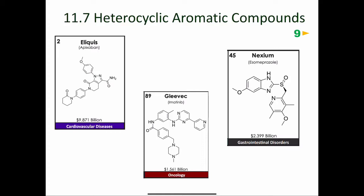Many blockbuster drugs contain heterocycles. You can see that Eliquis has made almost $10 billion and contains a heterocycle. The same thing applies for Gleevec, which is an anti-cancer drug — you can see it has a pyrimidine ring and a pyridine ring in it.